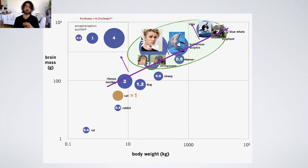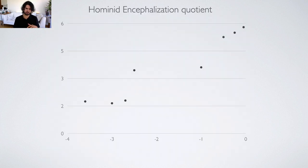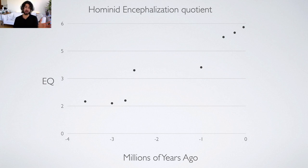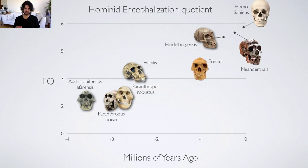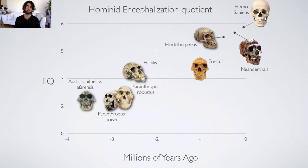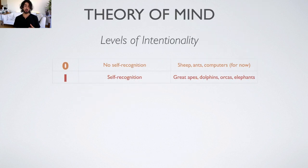Looking at the fossil record, we've actually been able to calculate how the encephalization quotient has changed over our recent hominid history. On the x-axis you have millions of years ago, starting from just after our deviation from our common ancestor with the chimpanzee, and on the y-axis the encephalization quotient. There has been a pretty sharp increase going from a level of about two — roughly equivalent to rhesus monkeys and elephants — over the span of four million years, increasing to something approaching six. That's a staggering increase, and it loosely follows the level of intentionality that humans have developed in that time.